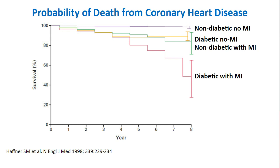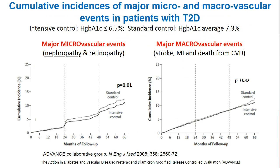Another bad news for individuals with type 2 diabetes is that strict glycemic control doesn't decrease the incidence of stroke, MI, or death from cardiovascular disease. This has been demonstrated by multiple studies. Here I'm showing the results of one such study called ADVANCE. Strict glycemic control reduced incidence of microvascular events, such as nephropathy and retinopathy, but not macrovascular events such as stroke, MI, and death. So we believe that there are possibly other pathways that underlie cardiovascular disease in individuals with diabetes.